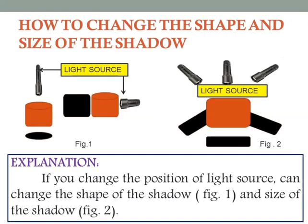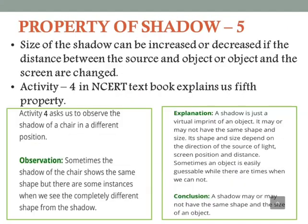For better understanding of the fifth property, let's understand how to change the shape and size of a shadow. If you change the position of the light source, you can change the shape of the shadow, as shown in figure 1, and the size of the shadow, as shown in figure 2. The size of the shadow can be increased or decreased if the distance between the source and object, or object and screen, are changed. Activity 4 in the NCERT textbook explains this fifth property. A shadow is just a virtual imprint of an object — it may or may not have the same shape and size. Its shape and size depend on the direction of the source of light, screen position, and distance.